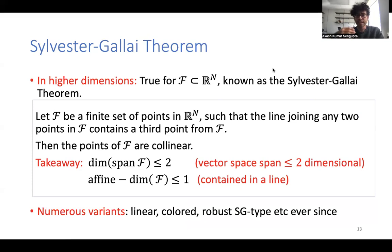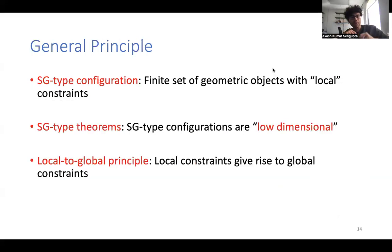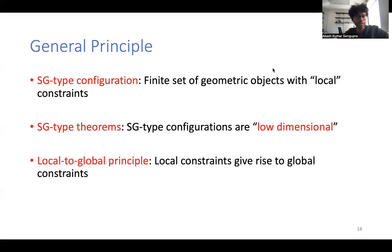Ever since, there have been various variants and numerous generalizations, such as linear, colored, and robust Sylvester-Galai configurations. The general principle behind all these Sylvester-Galai type theorems is the following: a Sylvester-Galai configuration is a finite set of geometric objects with some local constraints, and Sylvester-Galai type theorems always share the common theme that these configurations are always low-dimensional. We can think of these results as a local-to-global principle, where local constraints give rise to global constraints.